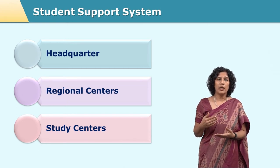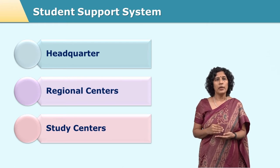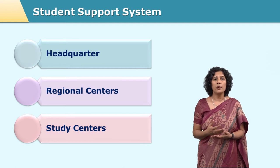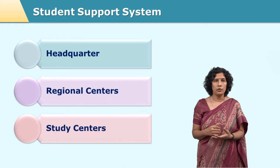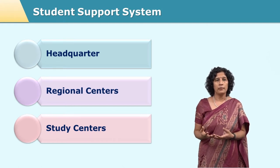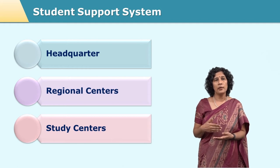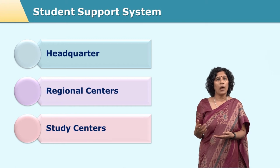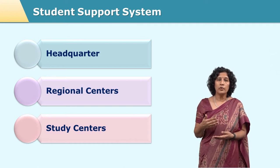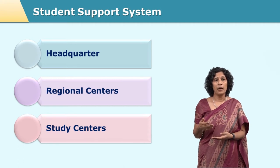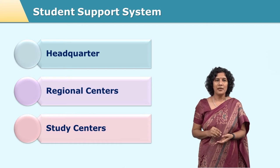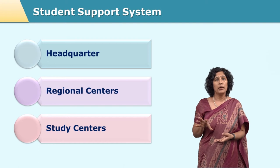That is why they need something called regional centers. The university headquarters may be situated at one location whereas the regional centers are located at the various regions of operation of that particular university. For example, if we take IGNOU — Indira Gandhi National Open University — being a national open university, the regional centers are located in every state, one regional center per state. If we take an example of Yashwantrao Chavan Maharashtra Open University, which is a state open university, the regional centers are located at places like Mumbai, Pune, Nasik, Aurangabad, Nanded, Kolhapur, and Nagpur. Thus, the regional center takes care of the working in that particular region.